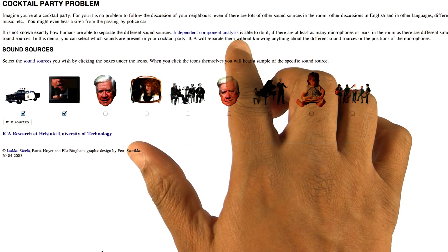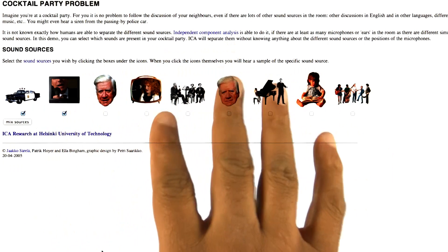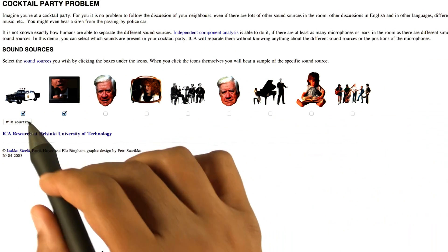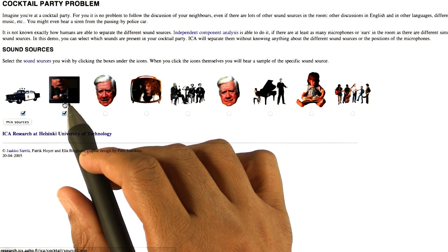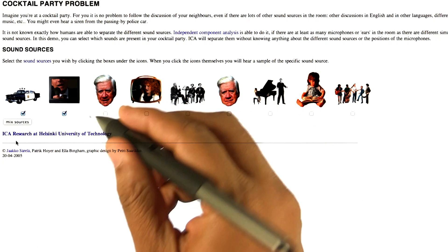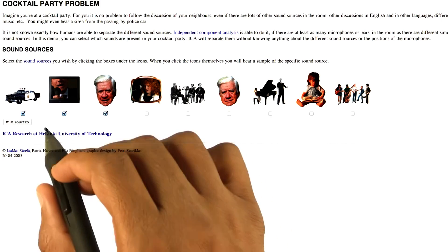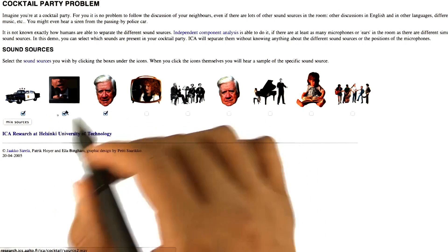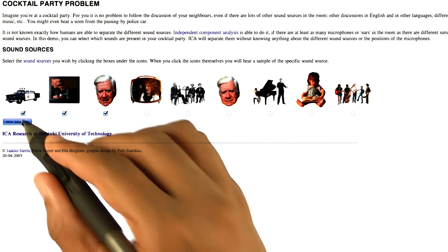They're going to use independent components analysis as a way of recovering original sounds. So here you see that I've clicked onto a police car, somebody talking in a commercial, and let's say this dude here. What it's going to do is generate sounds for each of these three sources that are all independently generated, and it's going to mix them.